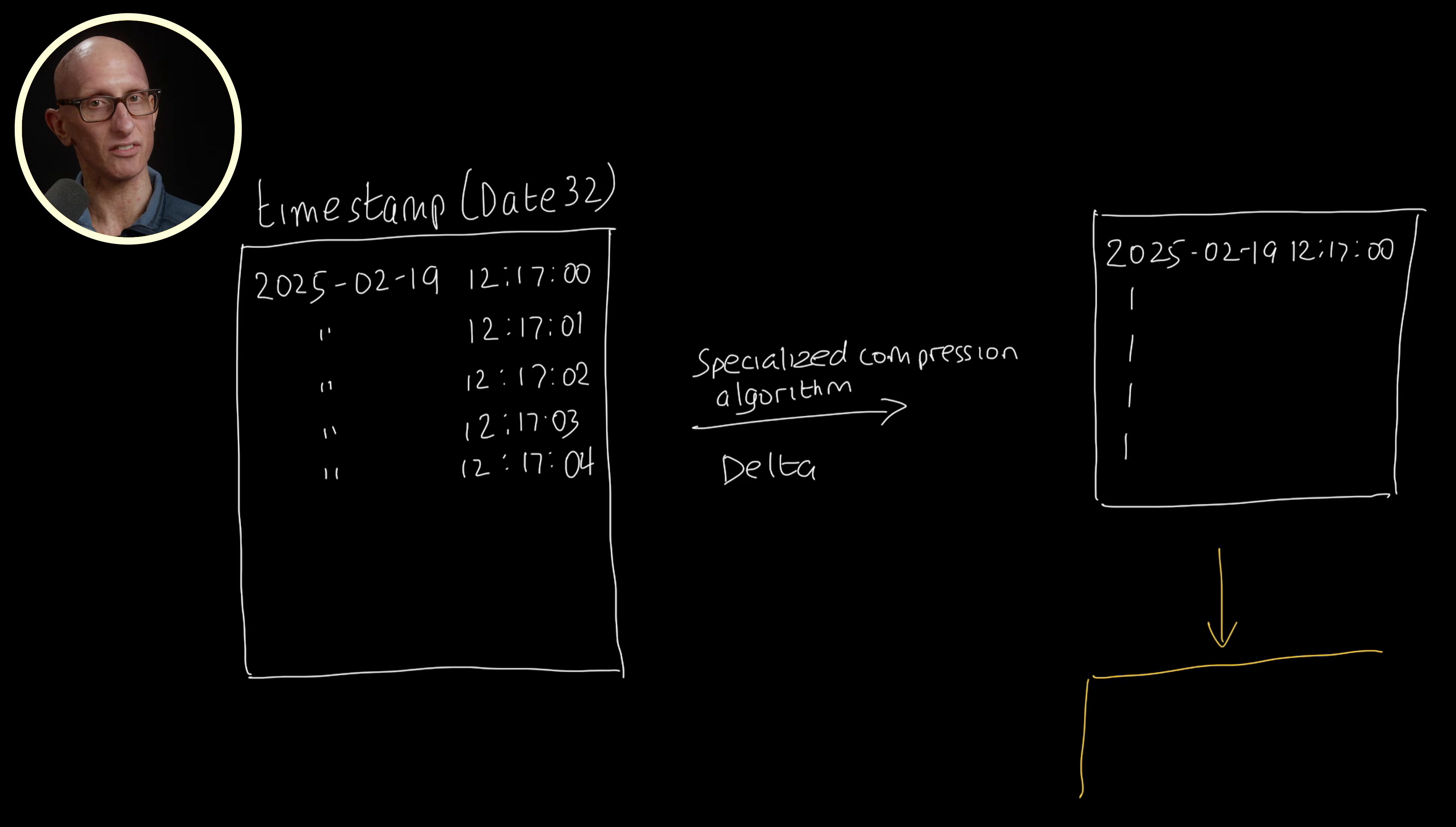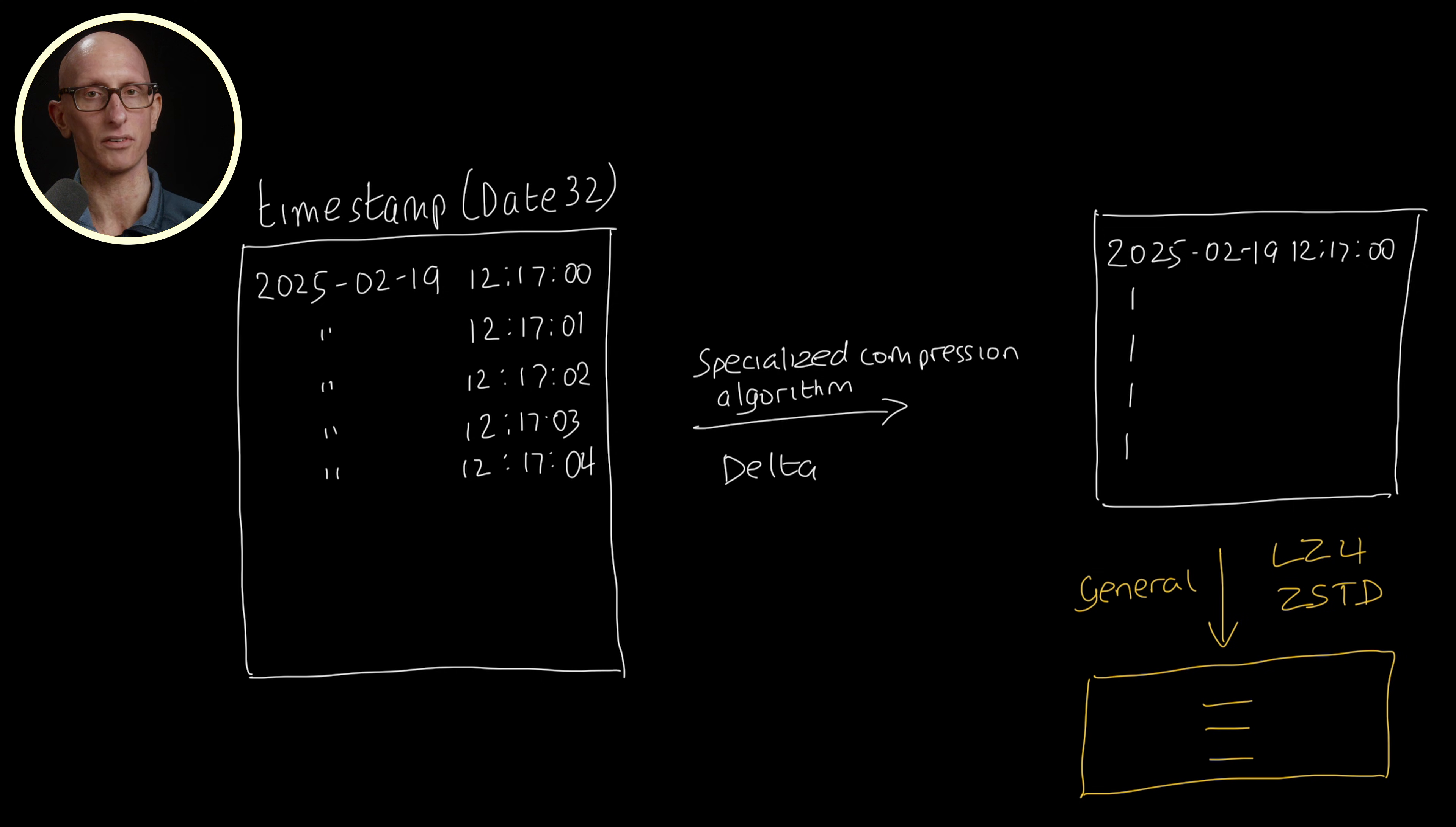We could then apply a general algorithm like LZ4 after the Delta algorithm. This is called codec chaining. And we can have as many algorithms in that chain as we like. We can also apply an encryption codec at the end for sensitive data.